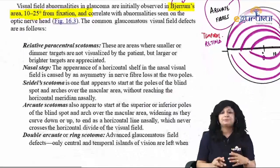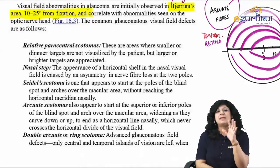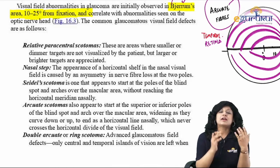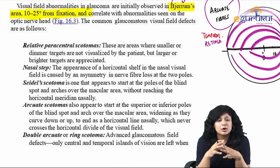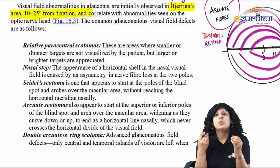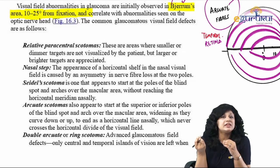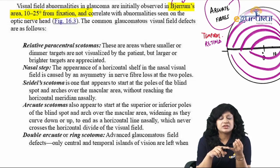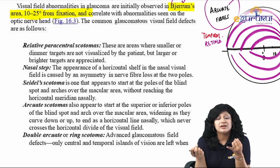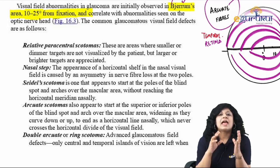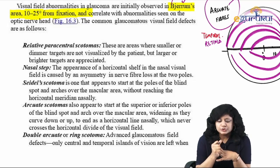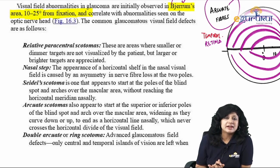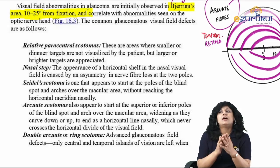We have covered the very basic pathophysiology of glaucoma, the aqueous drainage, types of glaucoma, what we need to call it glaucoma, why we have changes due to increased IOP, why it is maximum in the optic nerve, what lamina cribrosa is, and how it affects the visual field. Next time, we will be doing the visual field effects in detail.